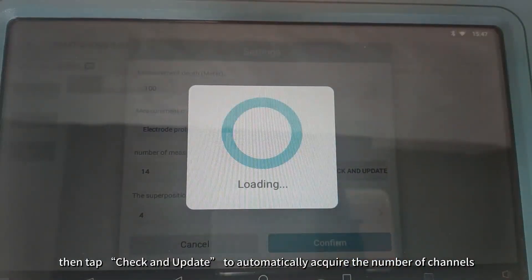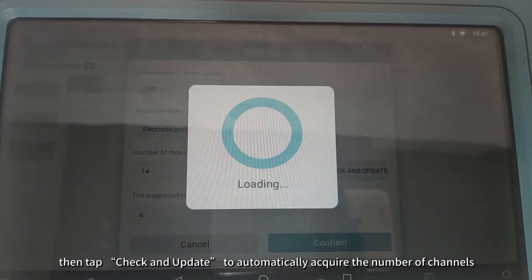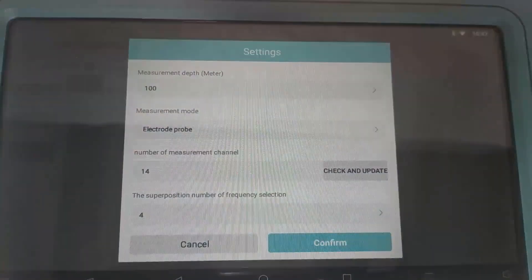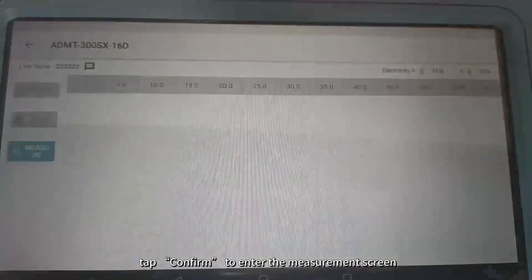Then tap Check and Update to automatically acquire the number of channels. Tap Confirm to enter the measurement screen.